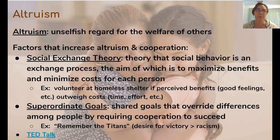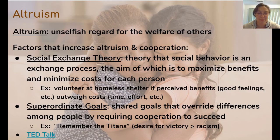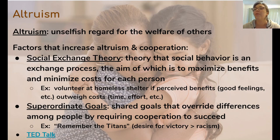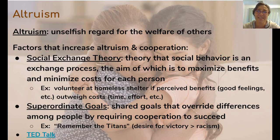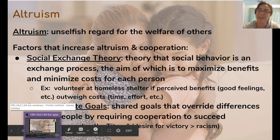The movie Remember the Titans is an excellent example of superordinate goals — if you haven't seen it, consider that your homework. It's a football movie about football defeating racism: the team's strong desire for victory as a superordinate goal overrides the racism within the team. The superordinate goal creates altruism by having people unite for a larger cause. That's it for today's lesson — I hope you enjoyed it and learned something. I miss seeing everyone — stay in touch, say hi, and let me know how you're doing!